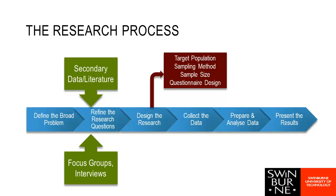Then we need to design our research — a reasonable chunk of this course covers sampling methods and questionnaire design: how do I choose the people and how do I collect data from them? We then go through the data collection process, which could be a web survey, telephone surveys, face-to-face surveying, interviewing, or focus groups. We then analyze our data and present results with recommendations and conclusions. This is the process we're going to go through, and each of these steps represents material we'll be covering throughout this study period.